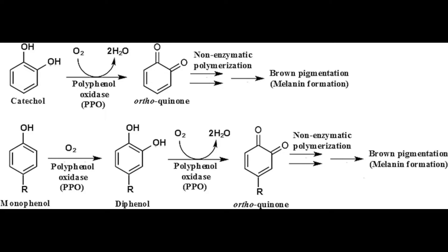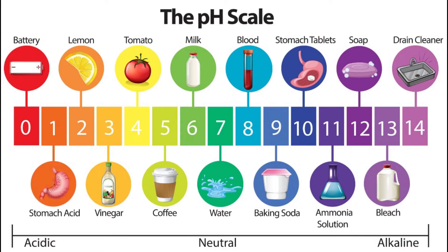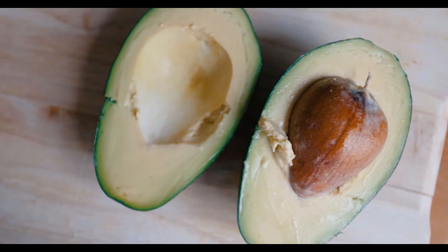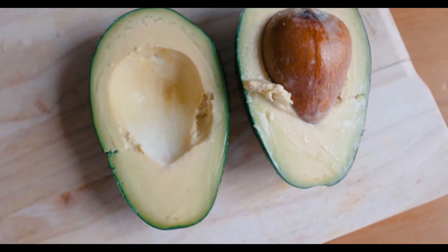PPO catalyzes two basic reactions: hydroxylation to the position adjacent to an existing hydroxyl group of the phenolic substrate (monophenol oxidase activity), and oxidation of diphenol to o-benzoquinones. PPO is active between pH 5 and 7 and does not have a very sharp pH optimum. At lower pH values of approximately 3, the enzyme is irreversibly inactivated. Reagents that complex or remove copper from the prosthetic group of the enzyme also inactivate it.